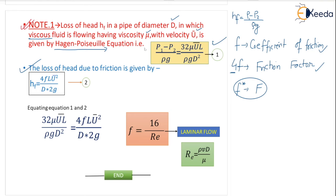Both are head loss formulas. Equating equation 1 and equation 2: 32 mu u bar L by rho g D square equals 4F L V square by D into 2g. Now cancelling common terms: g gets cancelled, u bar gets cancelled, L gets cancelled, and one D also gets cancelled.